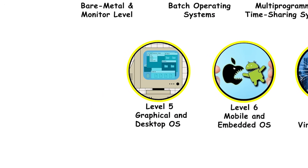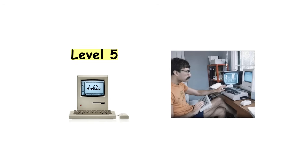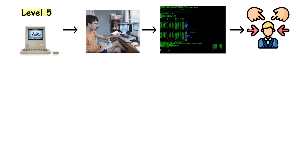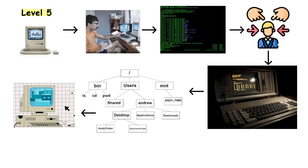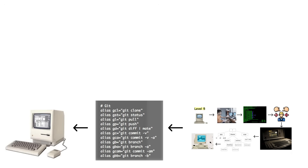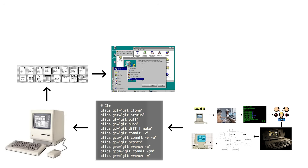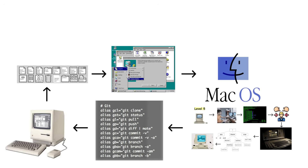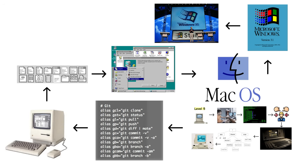Level 5: graphical and desktop operating systems — the consumer revolution. This is where computers became consumer products. The command-line was powerful but intimidating; most people couldn't remember arcane commands or navigate directory structures with text. The graphical user interface changed everything. Instead of typing commands, you point and click. Files are represented as icons you can drag and drop. Mac OS pioneered this for consumers starting in 1984, then Windows 3.1 in 1992 and Windows 95 in 1995 brought GUIs to the masses.